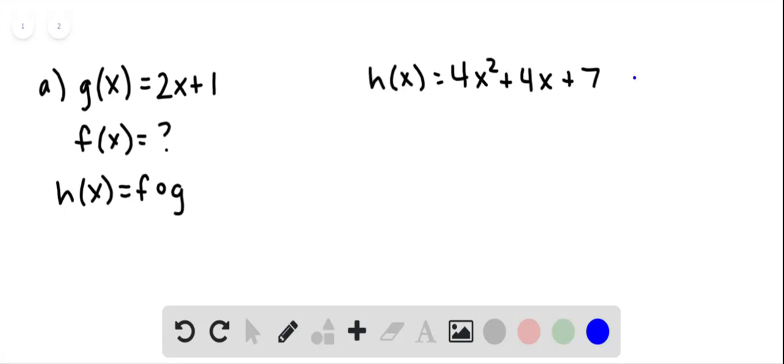So here we have function h of x, and we know that h of x is f of g. g is the inside function and we know it, but we don't know the outside function. That's what we're going to find. We're going to find f.